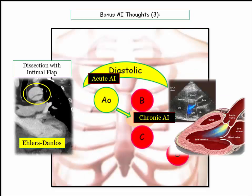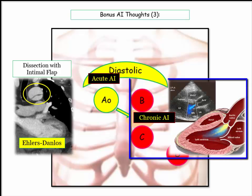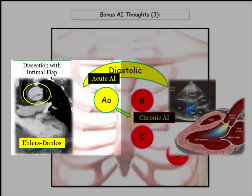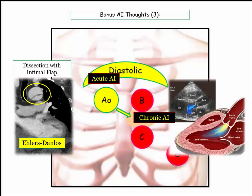Our discussion of volume overload in aortic regurgitation assumes chronic valvular insufficiency in a compensated patient. Acute aortic insufficiency in the setting of dissection is a different entity — nearly fatal, as the heart has no capacity to adapt to the volume overload state. As such, the diastolic murmur of acute aortic insufficiency is heard over the aortic region or right upper sternal border, not radiating toward the left sternal border as in the chronic form.